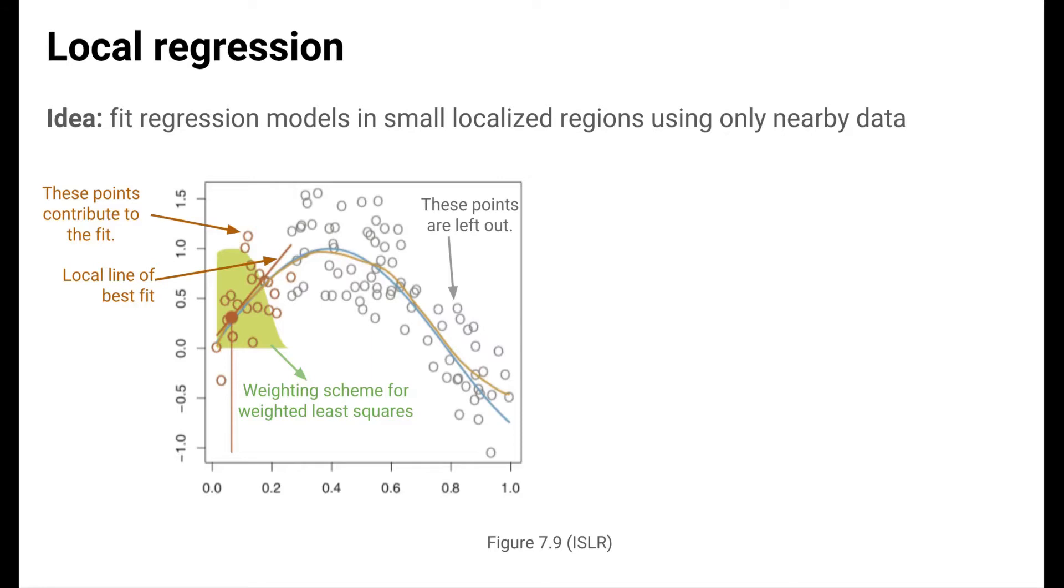The shaded distribution illustrates the weighting scheme. The height of the distribution indicates how much weight a data point at that x-axis location is given in the weighted least squares estimation. Repeating this process for a grid of x-axis points gives the estimated function in orange. The estimate is fairly close to the true function in blue, which happens to be known in this case because the data were simulated.